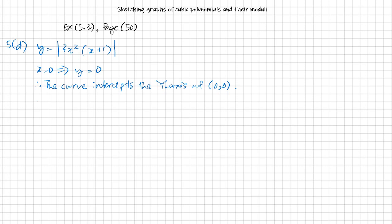When y equals 0, the modulus of 3x squared times x plus 1 equals 0. We need to find when 3x squared equals 0 or x plus 1 equals 0.